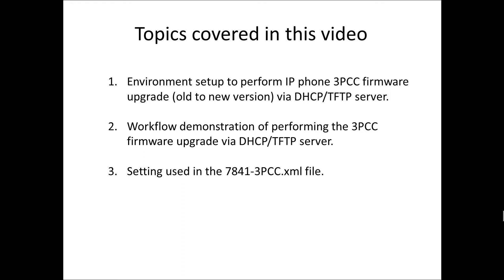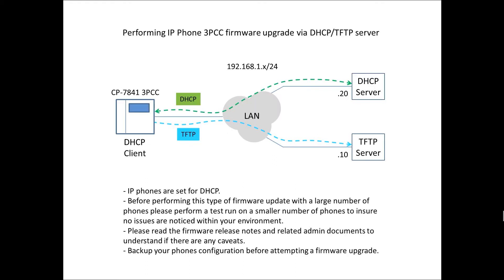The last item we're going to look at is the settings used in the 7841-3pcc.xml file. The topology we have for the setup is fairly simple. We have a DHCP server at .20, a TFTP server at .10, and all the phones are set for DHCP. Before attempting this type of firmware upgrade, we want to do it with a smaller number of phones to make sure there are no issues in our environment.